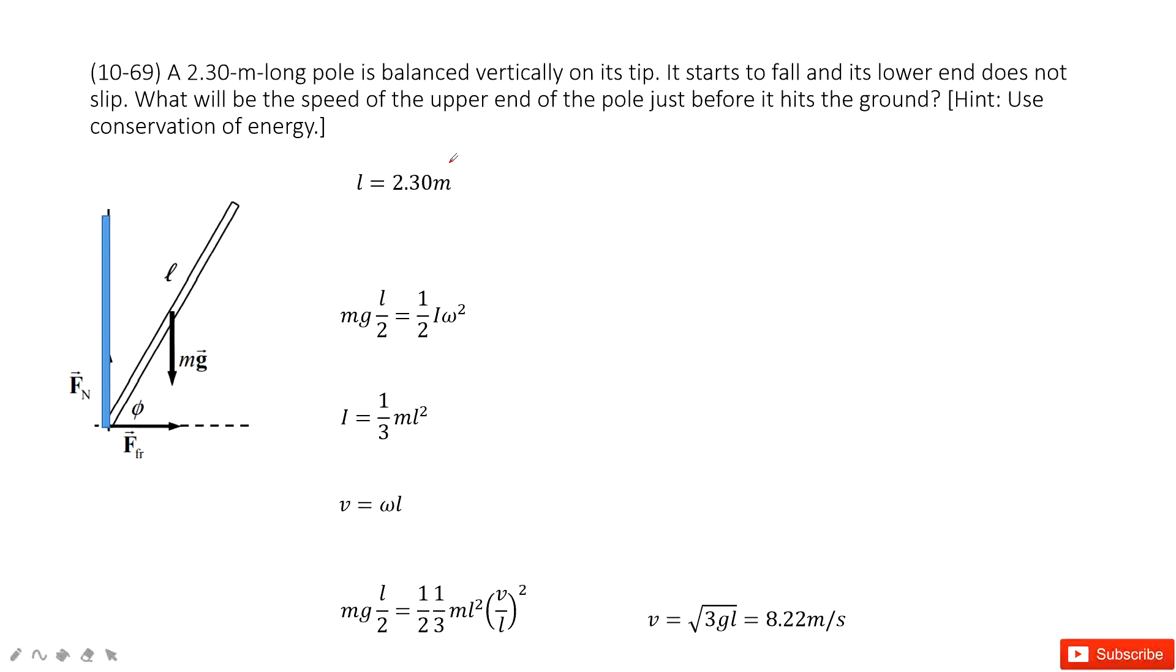In this chapter, we talk about rotational motion. In this system, initially we have the long rod. It sits balanced vertically on its tip.